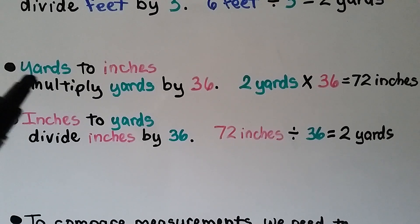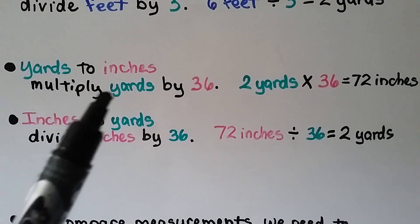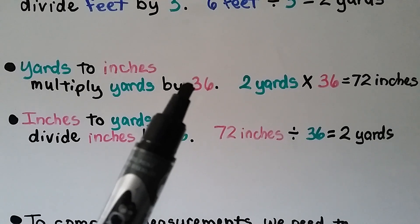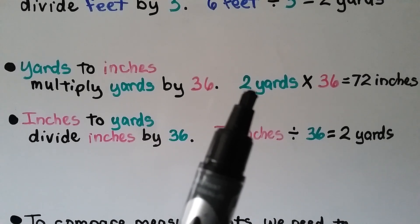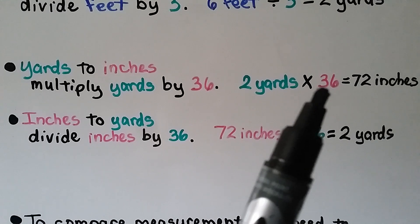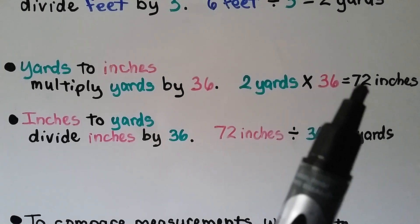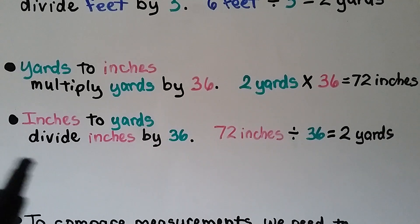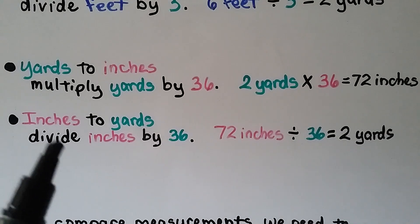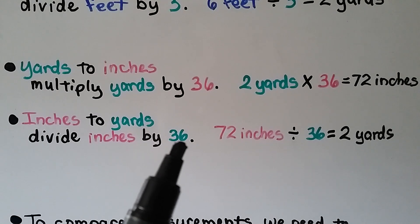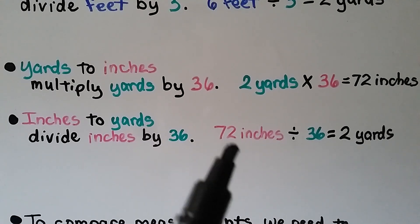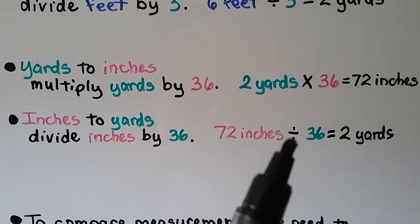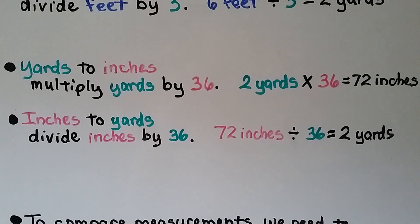To change yards to inches, multiply the yards by 36 because there are 36 inches in one yard: two yards times 36 equals 72 inches. To change inches to yards, divide the inches by 36: 72 inches divided by 36 equals two yards.